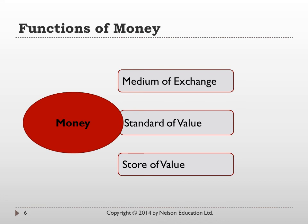Money also needs to serve as a store of value. Money is a measure of the unit of worth of goods or services, and is used to hold or measure wealth. It should retain its value over a period of time because some people may not need to spend their money today. Finally, money is a means to hold wealth — if it retains its value over time, you can accumulate money for future transactions.